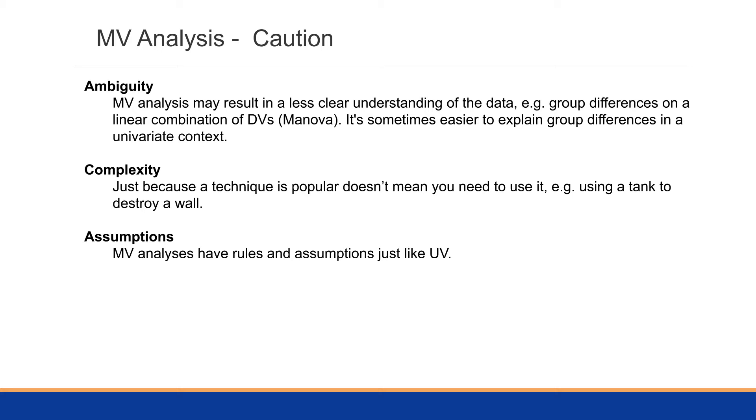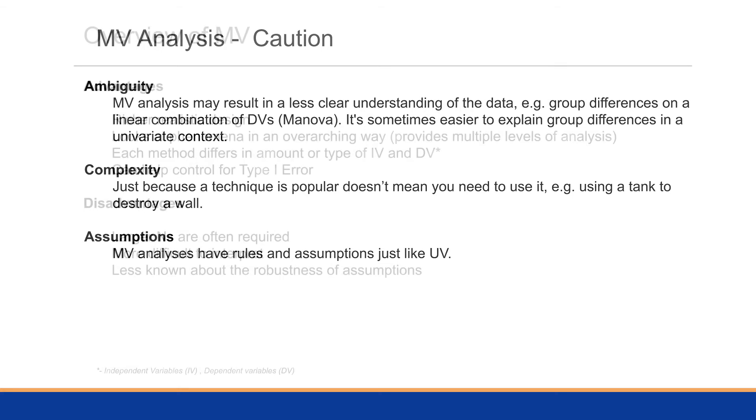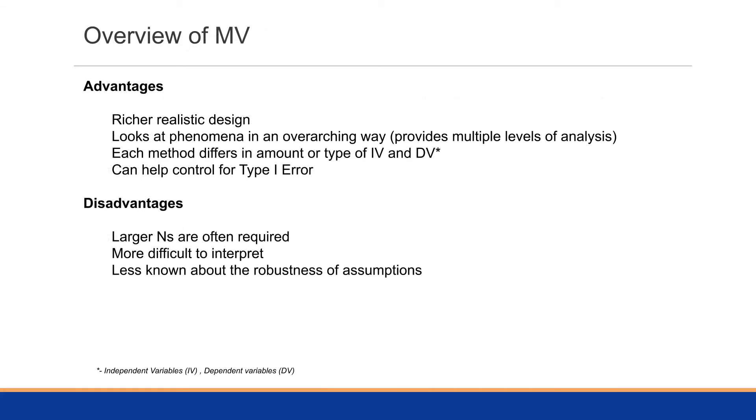The key on the assumptions is multivariate analysis do have rules and assumptions just like univariate analysis. Most of them will stem from the fact that they assume multivariate normal distribution, and we'll be focused on that in this course as well. Some of the advantages to multivariate are you have a richer and more realistic design. It looks at phenomena in an overarching way by providing multiple levels of analysis. Each method will differ in the amounts or type of independent variable and dependent variable, but one of the key things is that it will help control for a type 1 error.